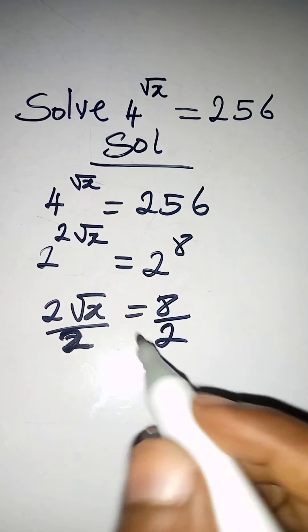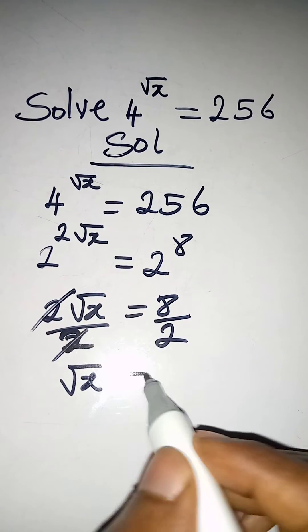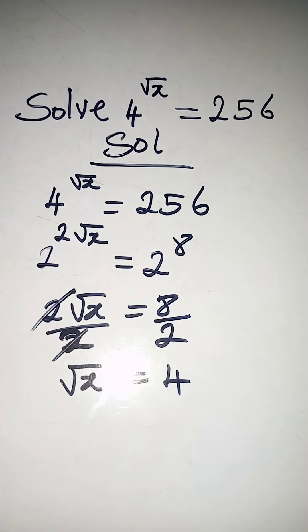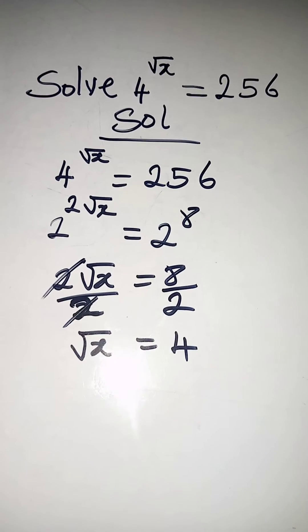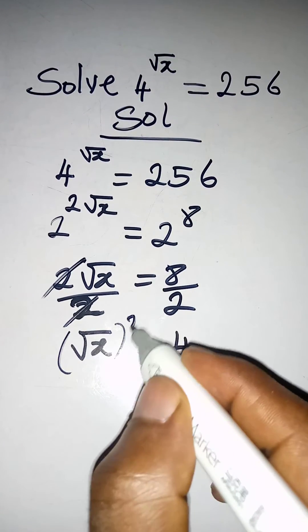Then root x is equal to 4, that is 8 divided by 2. Then what do I do from here? To eliminate the root, I will have to square both sides, right?